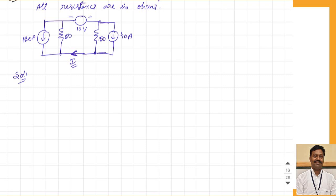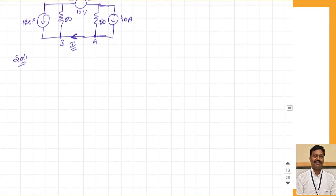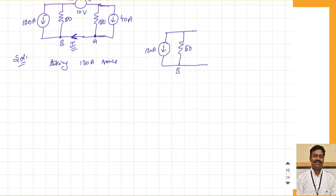Let us number the nodes: this node is A and the next node is B. We want the current passing from node A to node B. Taking one source at a time — there are three sources, so there will be three steps. First, taking the 120 ampere current source: across this there is 50 ohms and another resistance of 150 ohms. The voltage sources are replaced by their internal resistance, which is zero (short circuit), and the other current source is replaced by open circuit.